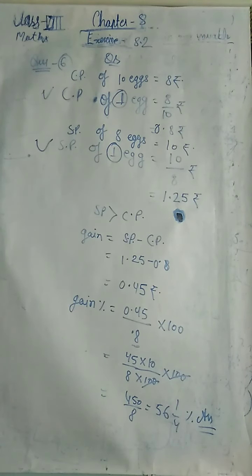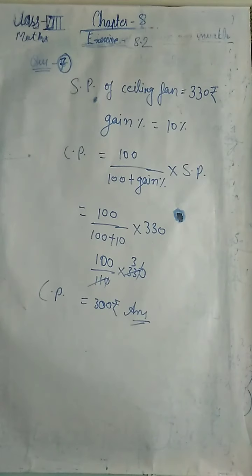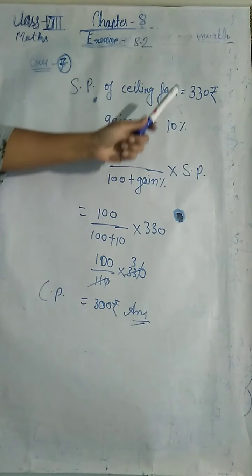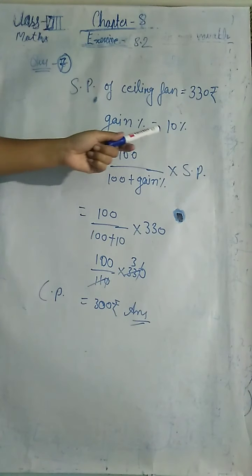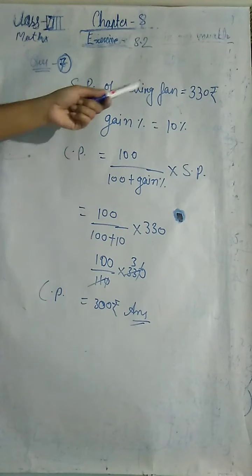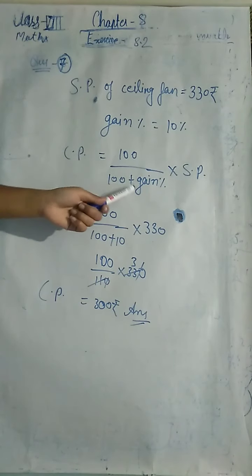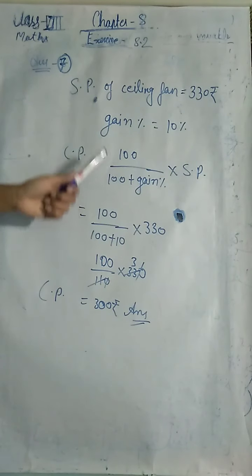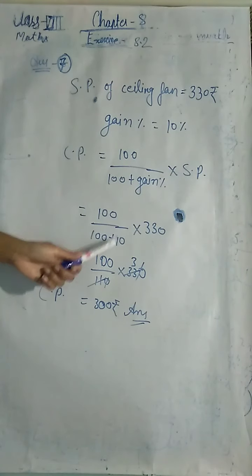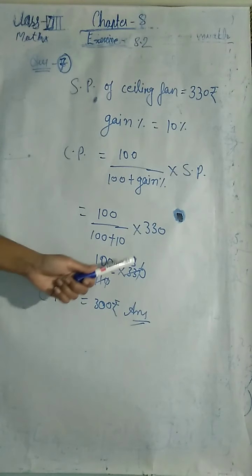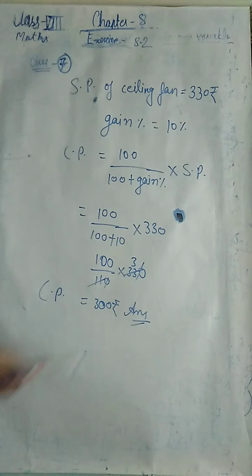Question number seven: by selling a ceiling fan for Rs. 330, a shopkeeper gains 10%. Find the cost price of the ceiling fan. SP = Rs. 330, gain percentage = 10%. Formula: CP = 100 / (100 + gain%) × SP = 100/110 × 330 = Rs. 300.